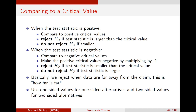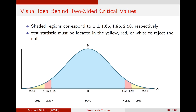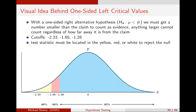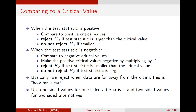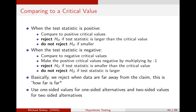This slide is super important: how do we make the comparison between the test statistic and the critical value? When the test statistic is positive, as in our case, we compare to the positive critical values. For two-sided tests, we compare to 1.65, 1.96, and 2.58; for one-sided tests, we compare to 1.28, 1.65, and 2.33. We reject if the test statistic is larger — meaning our sample is out in the tail. We don't reject if it's smaller. If the test statistic is negative, we compare to negative critical values — just put a minus sign in front. We reject if the test statistic is smaller, meaning further away from zero than the critical value, and don't reject if it's larger. We use one-sided values for one-sided alternatives and two-sided for two-sided.